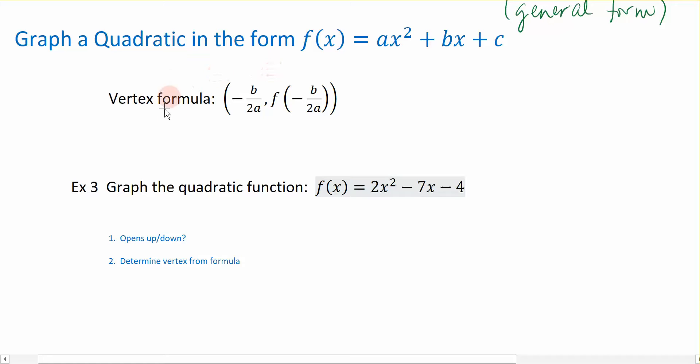We have a vertex formula. The vertex formula is going to take the a and the b out of the equation, and it's going to help us write the x and the y coordinate. Then we can identify the vertex and go on with graphing the equation like we did in the previous lesson.